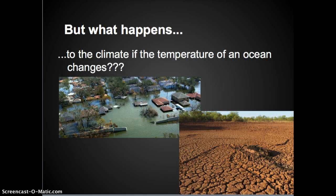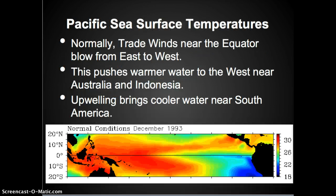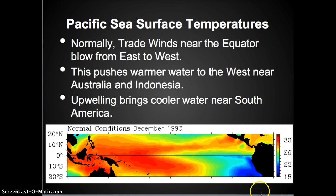But what happens to the climate if the temperature of an ocean changes? Can you have flooding or droughts? Let's look at this picture of Pacific sea surface temperatures. Normally we have trade winds near the equator blowing from east to west. This pushes warmer water to the west near Australia and Indonesia. We have an upwelling that brings cooler water near South America — you'll notice warm is red, blue is cool. An upwelling is deep cold water which rises towards the surface, displacing the warmer nutrient-depleted water with cooler nutrient-rich water.